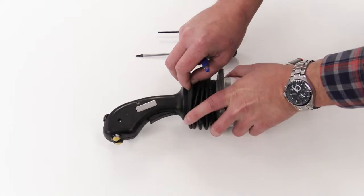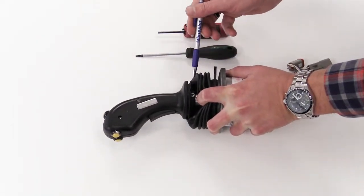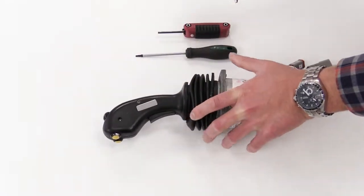And the 5/32nd Allen will be required to remove this Allen bolt here, and there's one 180 degrees out on the opposite side.